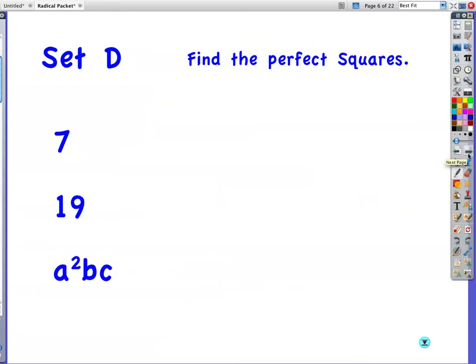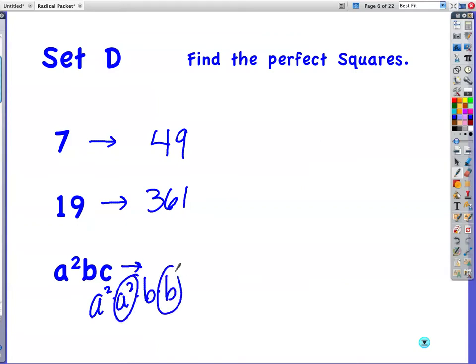Set D. Find the perfect square. So 7 is like my root. What is the square that goes with that? Well, what's 7 times 7? 49. 19 times 19. Do you remember that one off the top of your head? Yeah, I didn't either. 361. I knew it was in the 300s. This one I'm going to write out. A squared times A squared times B times B. I'm multiplying it times itself, basically. A squared times A to the second power is A to the fourth. Because when we multiply with like bases, we add our exponents. B times B is B squared. And C times C is C squared.